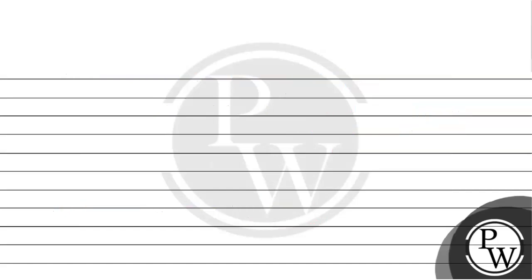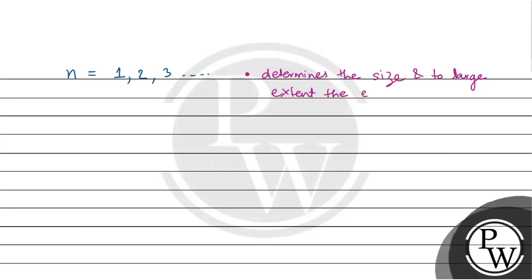The value of principal quantum number n lies from 1, 2, 3 onwards — it can be any positive integer. The principal quantum number determines the size and, to a large extent, the energy of the orbital. Basically, n tells us the shell.